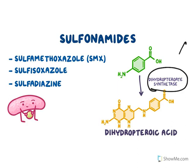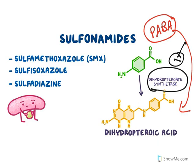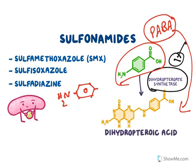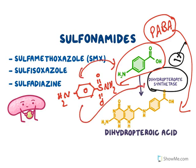Sulfonamides and sulfones interfere with the synthesis of folic acid by inhibiting the enzyme dihydropteroate synthase. The reason is they are structurally similar to para-aminobenzoic acid, which is an intermediate in the biosynthesis of folic acid. Sulfonamides have a similar structure — the para-position amino group is present — but instead of a carboxylic acid group, they contain a sulfonamide group. Because of this similarity, they bind with and inhibit the enzyme.